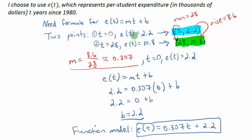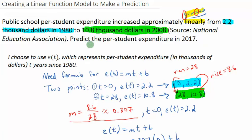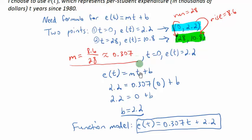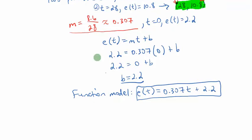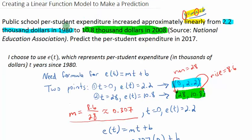So let's go find the question. Notice the question did not say anything about find an equation. All it told me was find the per student expenditure in 2017. Well, I needed an equation to predict that. I've got it now. So, what do I know about 2017? I know that my t value is 37 because 2017 is 37 years after my starting year of 1980.